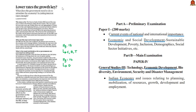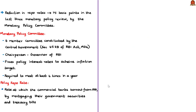This news article discusses the repo rate and its role in the growth of the economy. The Monetary Policy Committee has lowered the repo rate to 5.75% in the Monetary Policy Review meeting held in June. The central government has constituted a six-member Monetary Policy Committee as per Section 45 ZB of the Reserve Bank of India Act of 1934.